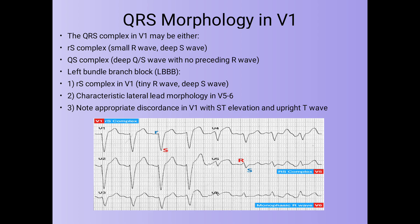The QRS morphology in V1 will be either an rS complex (small R wave and deep S wave) or a QS complex (Q and S wave with no preceding R wave). In V1 we get an rS complex with a tiny R wave and deep S wave. The characteristic lateral lead morphology in V5 and V6 will be a notched M-shaped R wave, or monophasic R wave. We also get appropriate discordance in V1 with ST elevation and upright T waves.